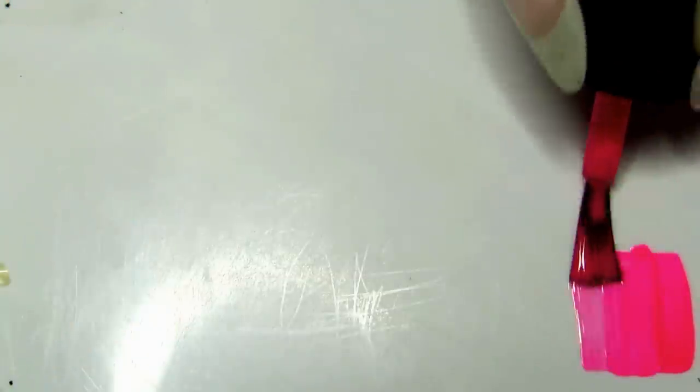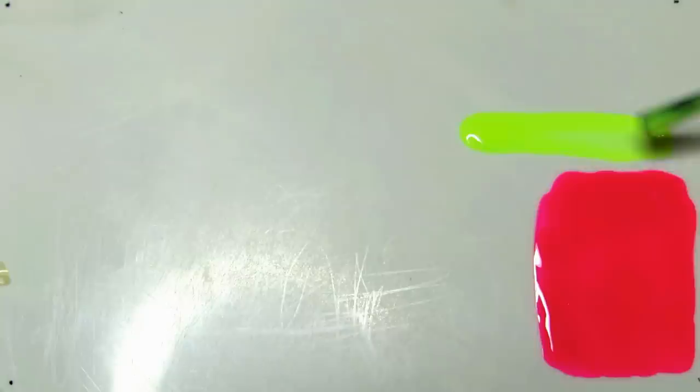Start by painting rectangular sections of neon polish on a clean, shiny plastic surface. Here I'm using a painter's palette. I'll leave a link below to where you can buy one.